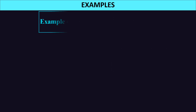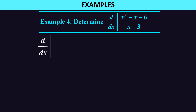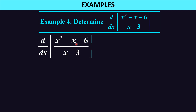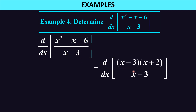Let us consider our fourth example: differentiate (x² minus x minus 6) divided by (x minus 3). This is a rational expression, so we factorize the numerator — it's a trinomial that factors as (x minus 3)(x plus 2), divided by (x minus 3). The (x minus 3) terms cancel, leaving x plus 2. Now we differentiate: x gives 1 and the constant 2 gives 0, so the derivative is 1.